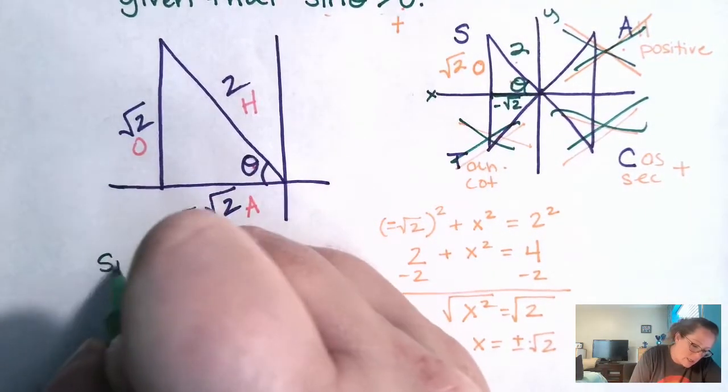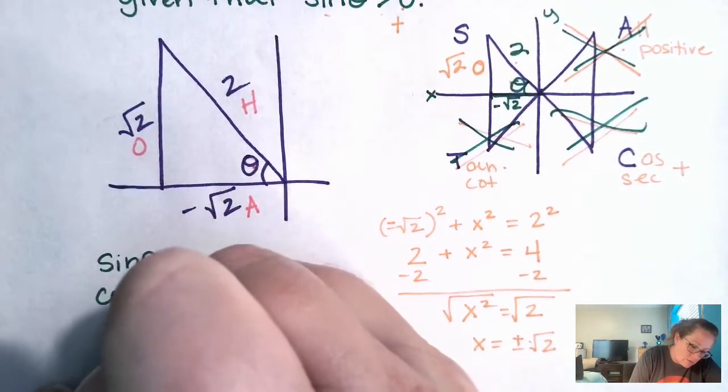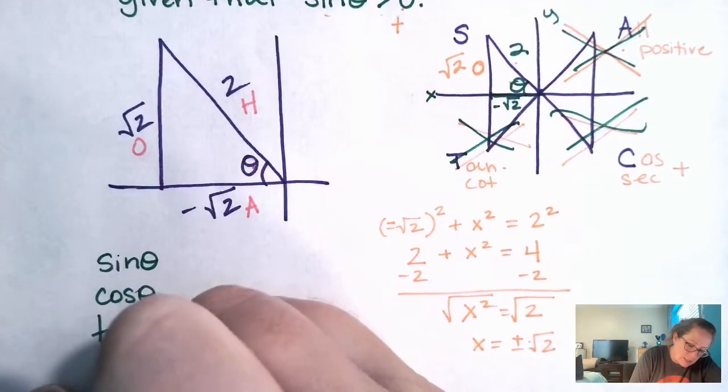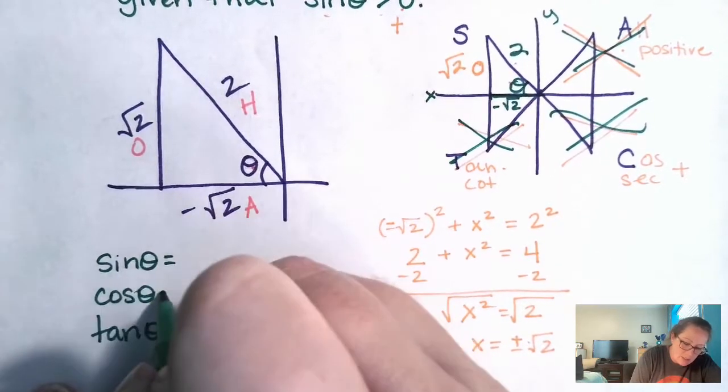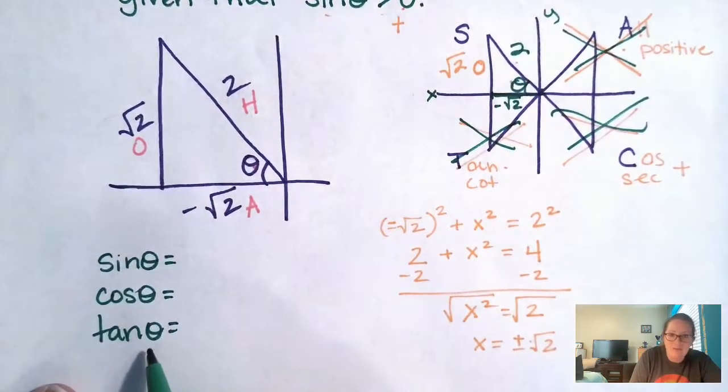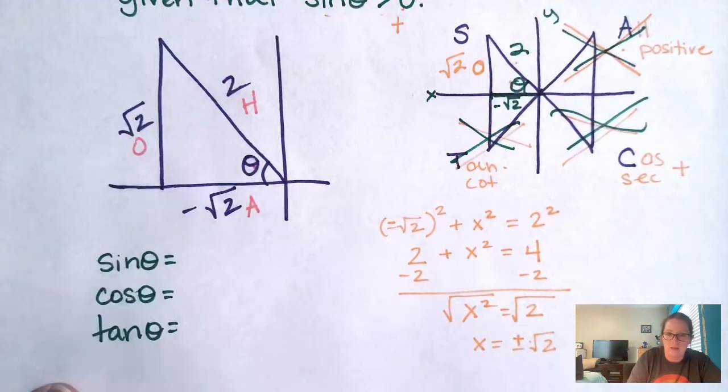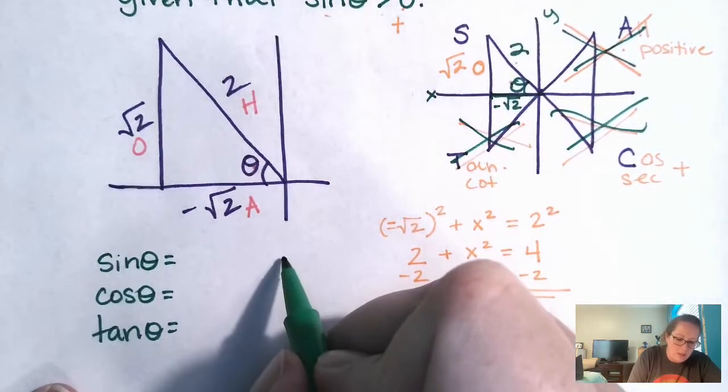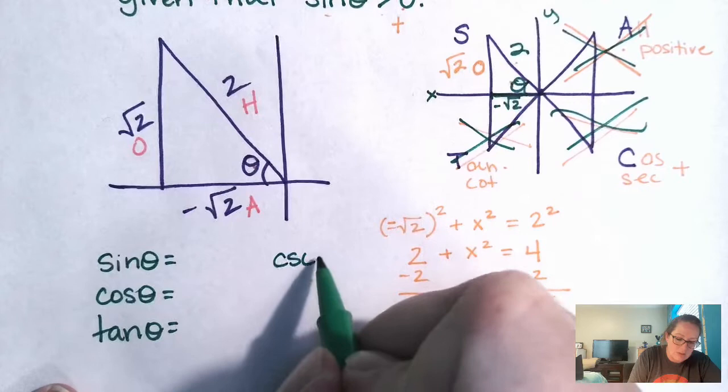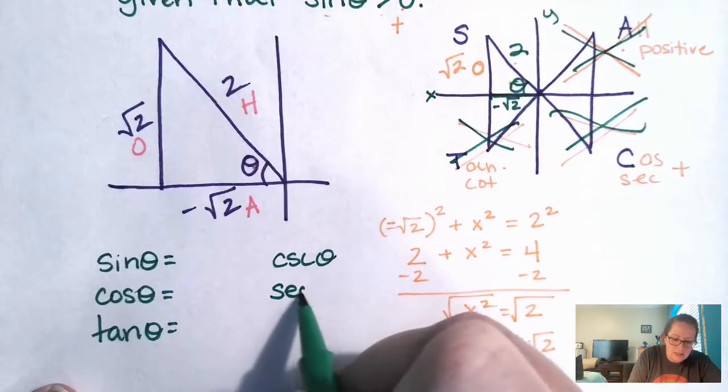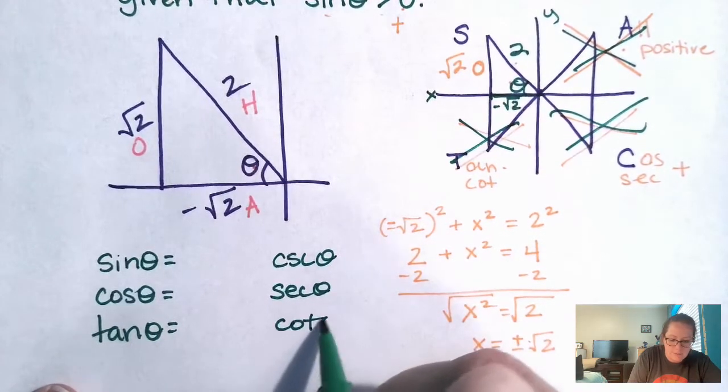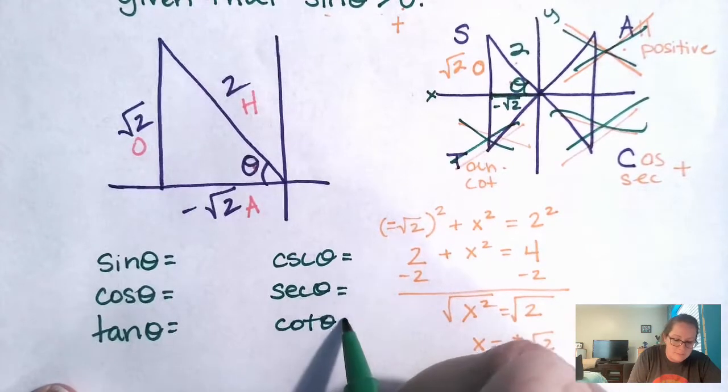So sine theta, cos theta, tan theta. You guys have to have this theta with it. If you didn't, it's just sin, cos, and tan. It's not mathematical. It has to have an angle with it. Okay. And then let's do the opposite one. So we got cosecant, secant, cotangent.